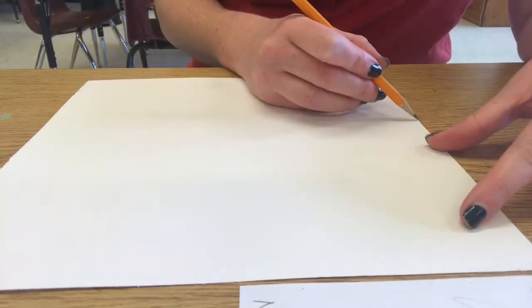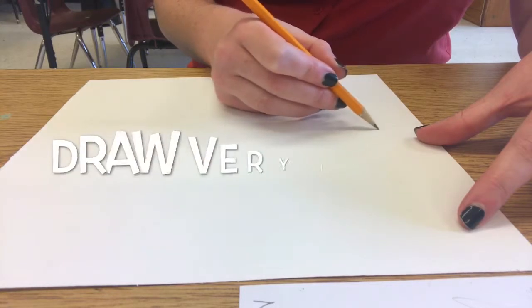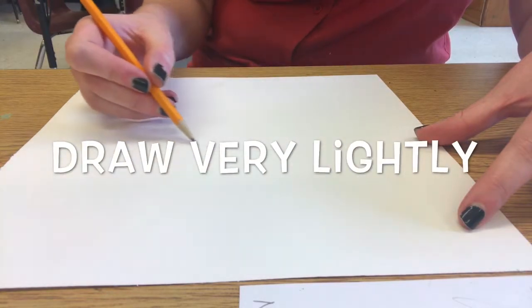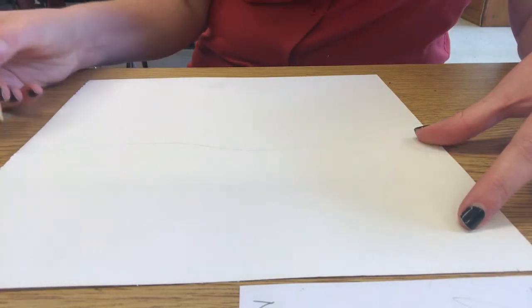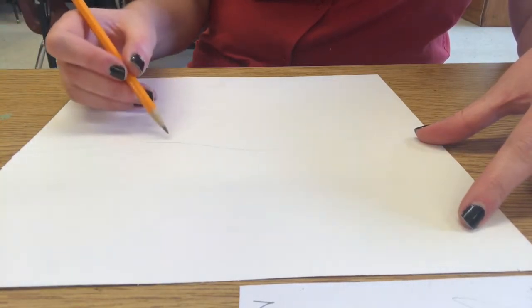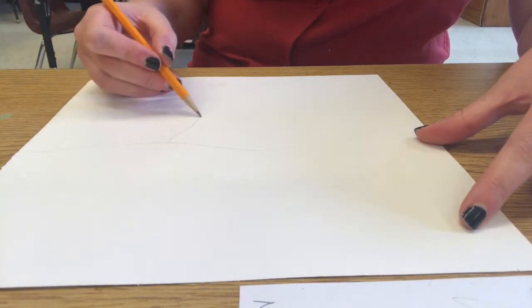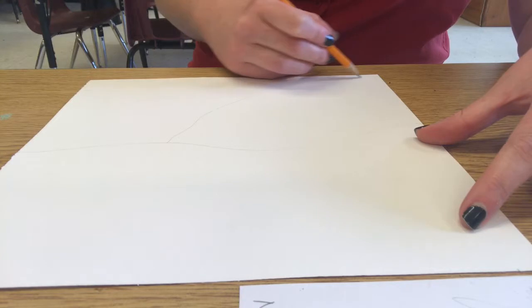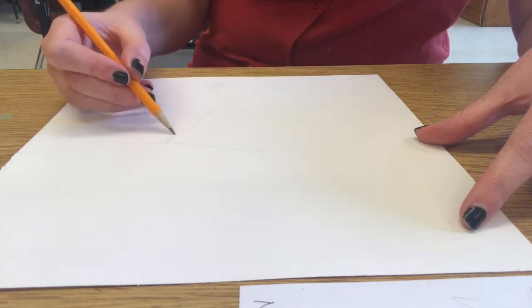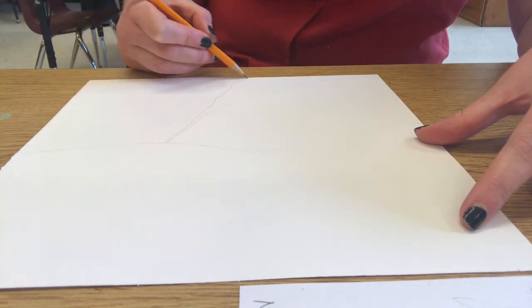When you start your sketch you want to make sure you can see the sketch that you made before and you want to draw very lightly with pencil. We really don't want to be able to see much of the pencil marks when you're done with your painting. This is just a guide for you when you start your painting. So draw really lightly and erase any mistakes as you go.